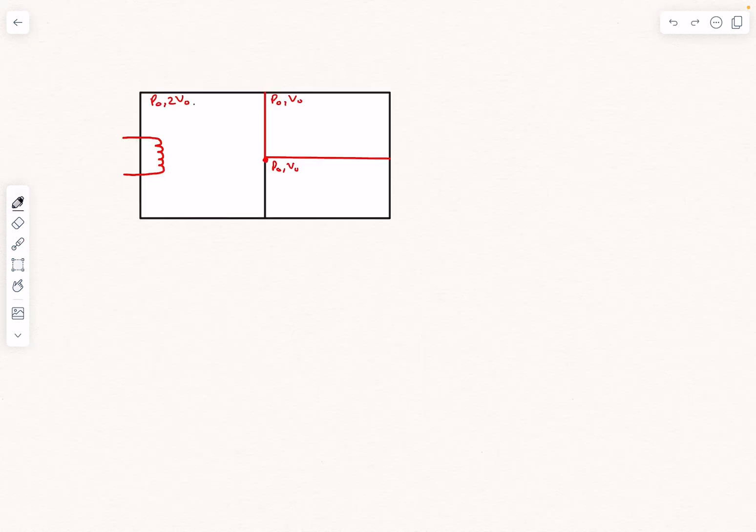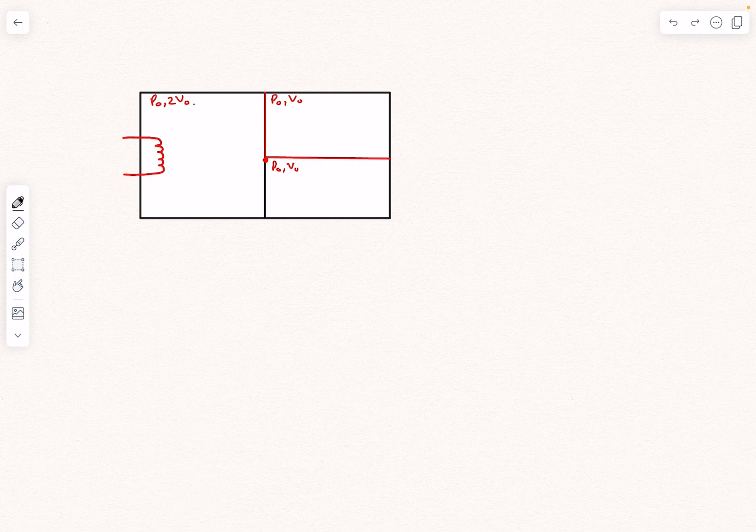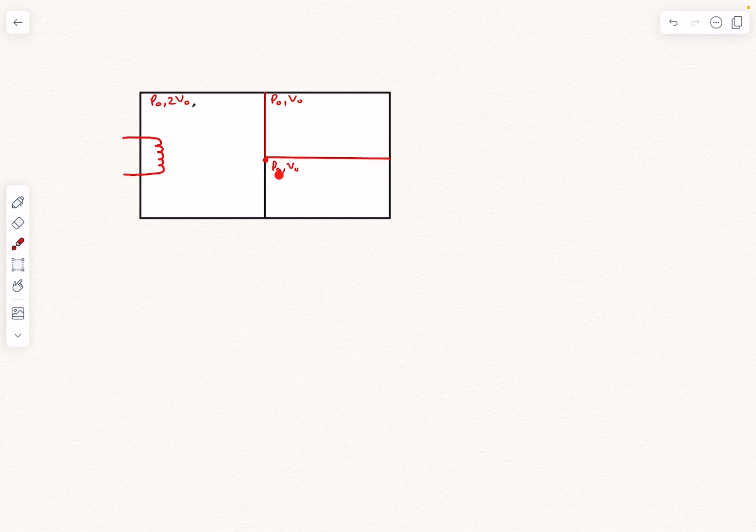Initially, the temperature everywhere you can easily figure out by using PV divided by NR. If you observe, everywhere PV divided by N is the same because N in the left section is 2 moles. So everywhere the temperature is going to be the same. This is how the initial state is looking.